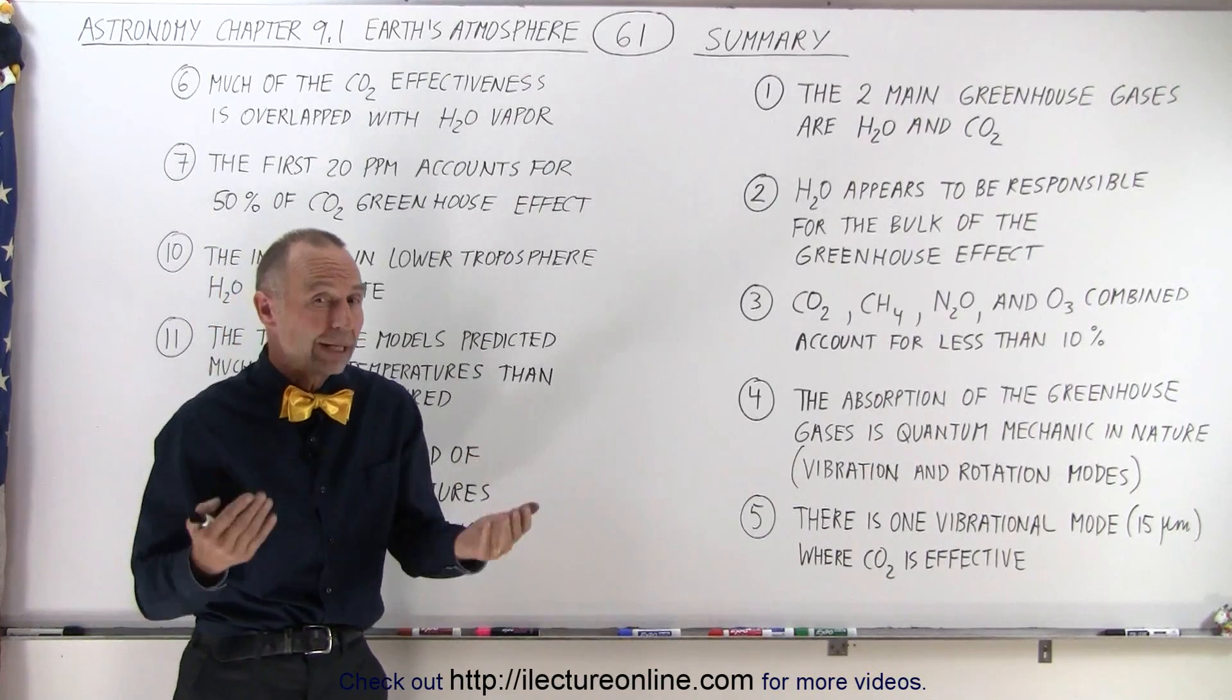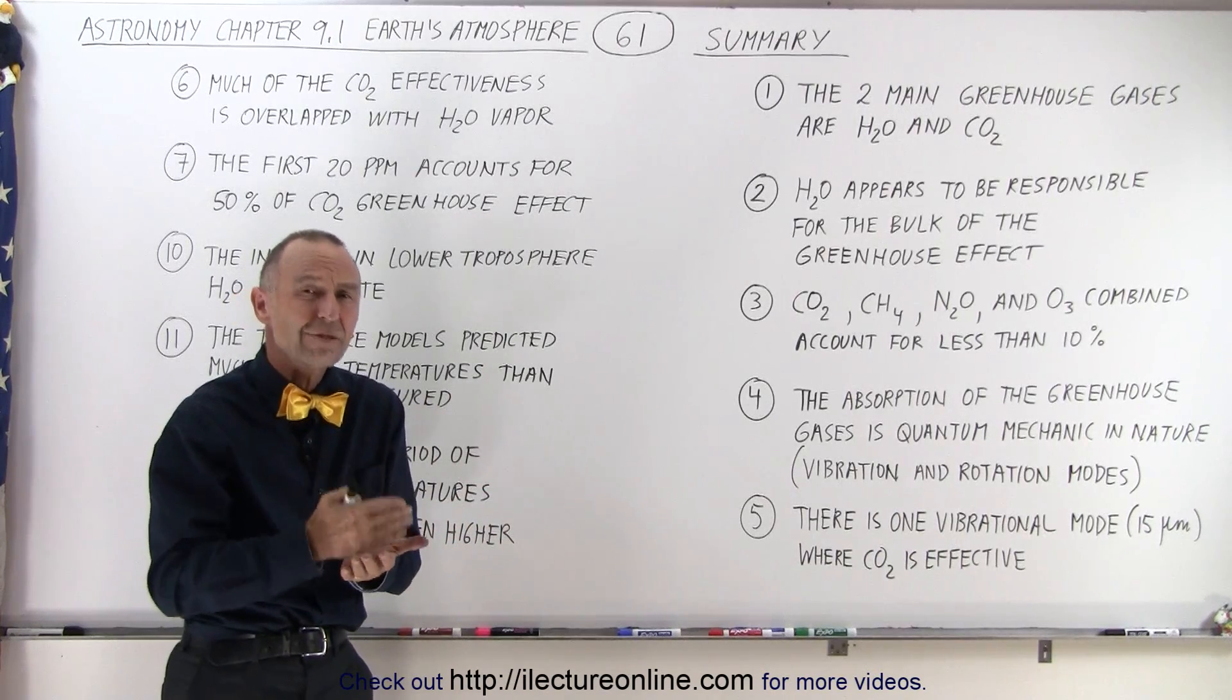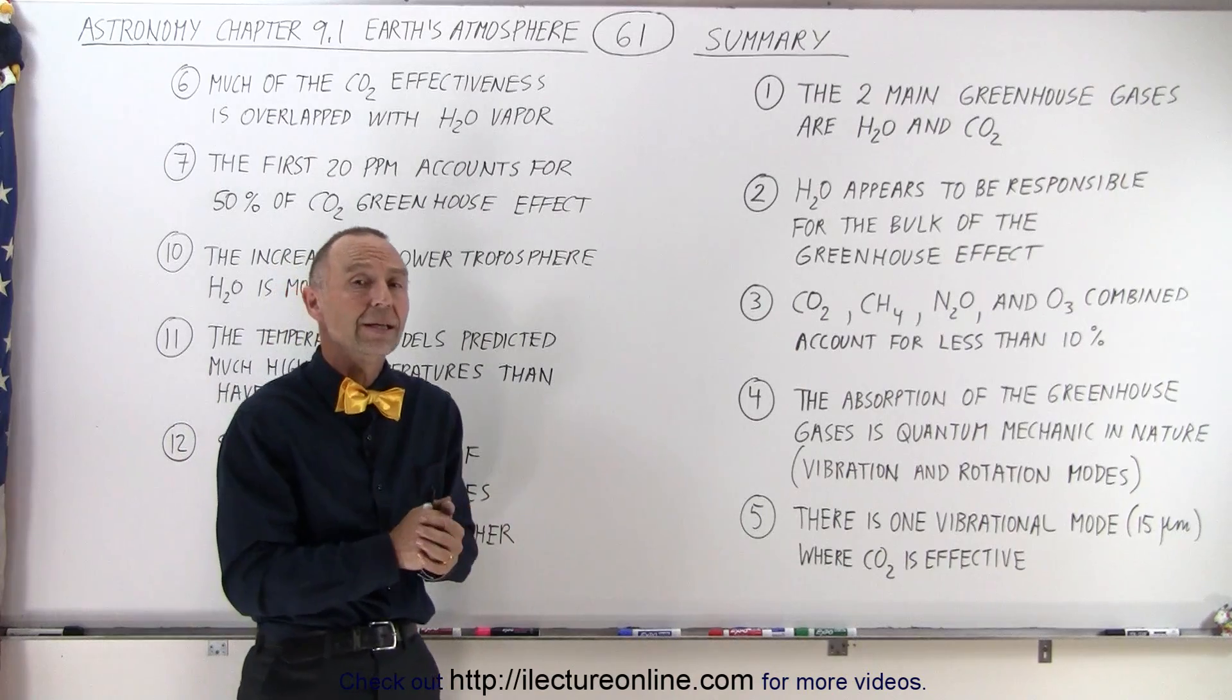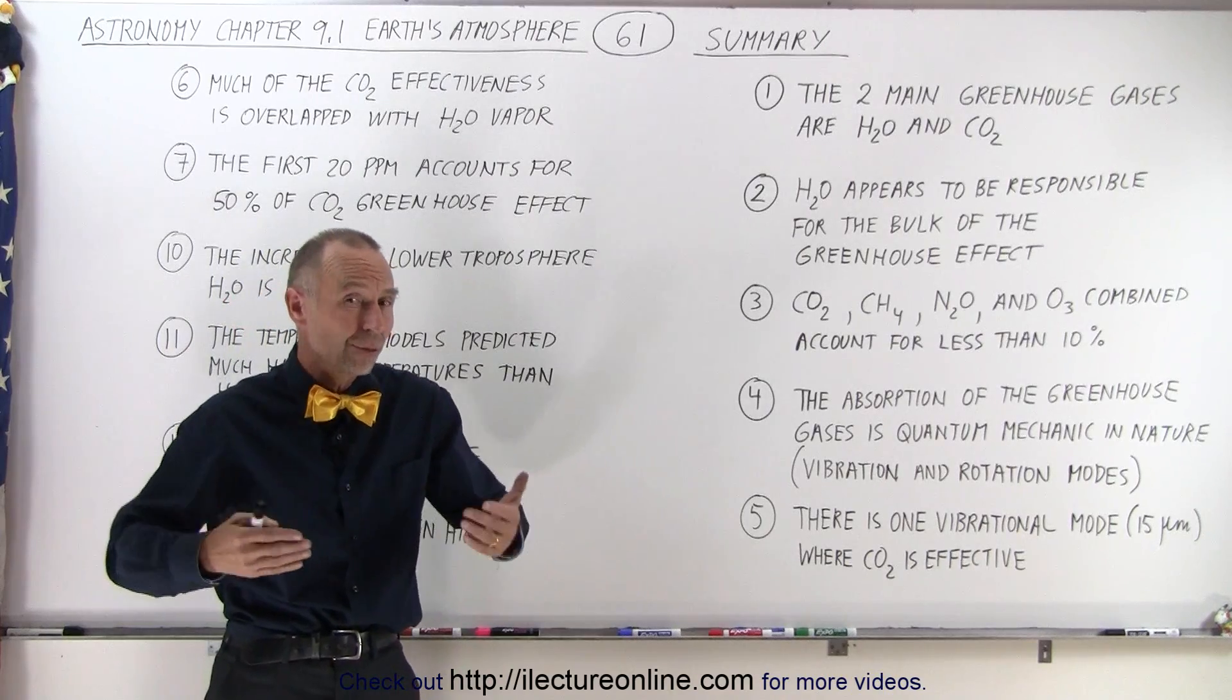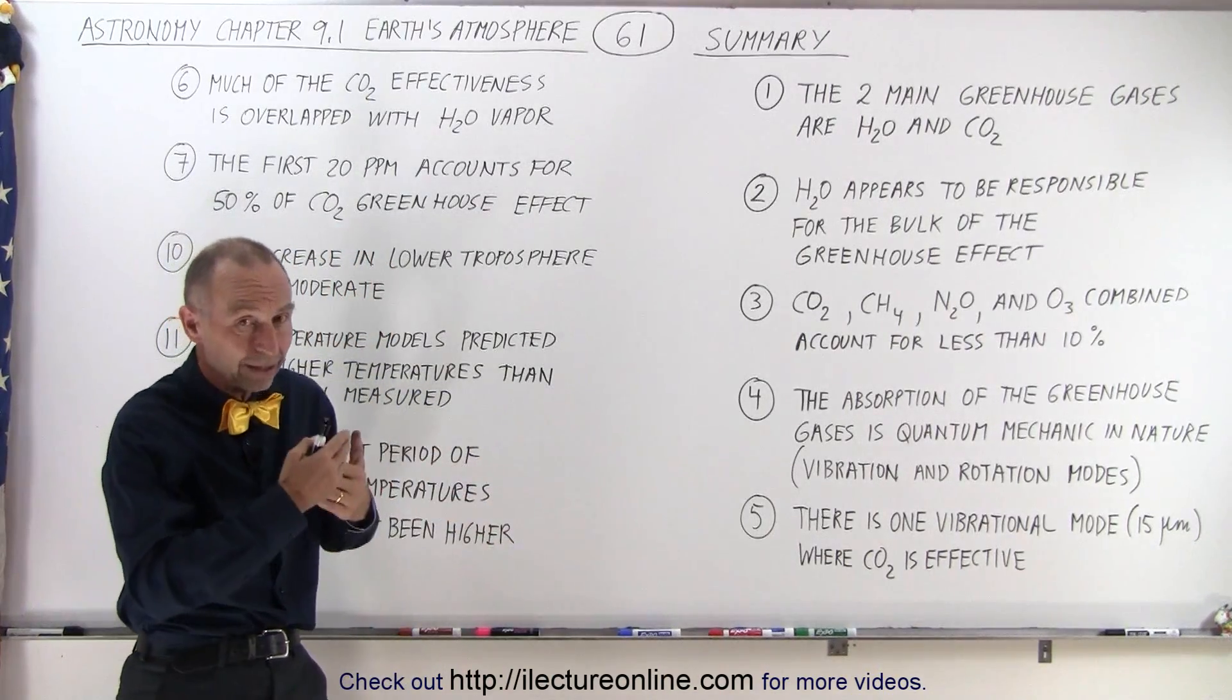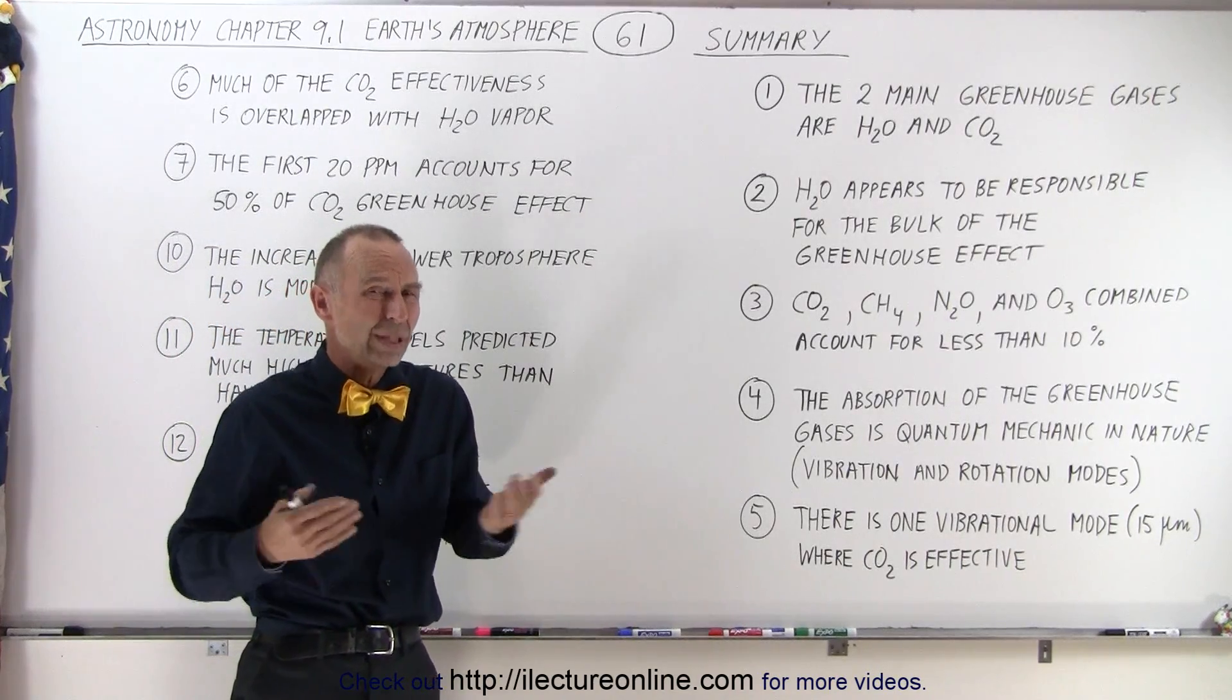We understand that without those greenhouse gases, the Earth would be bitterly cold, almost 60 degrees Fahrenheit or more than 30 degrees centigrade colder than it is today. So we live in a nice comfortable world because of these greenhouse gases. There's of course a concern that if there's too many of these greenhouse gases, it might even get too warm. And so we did a very exhaustive analysis to see if that was indeed the case. Do we need to worry?